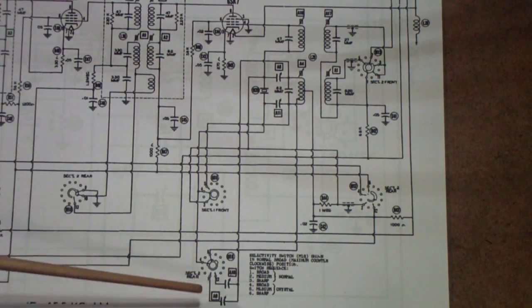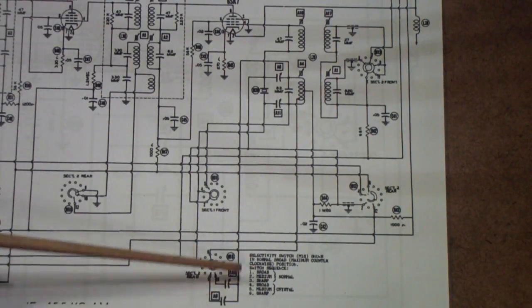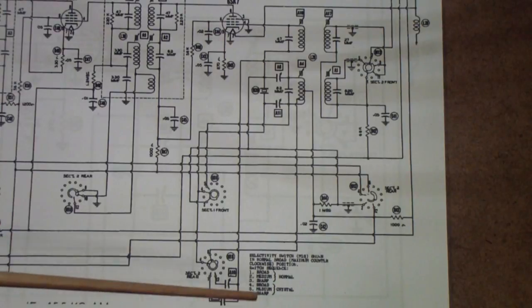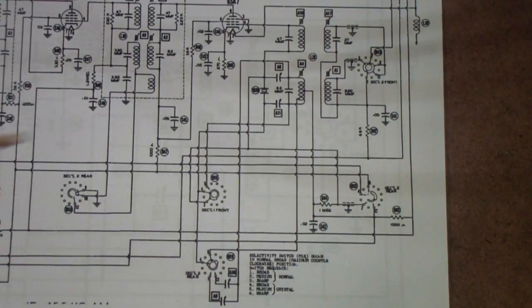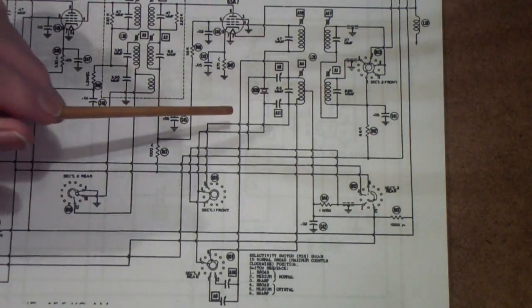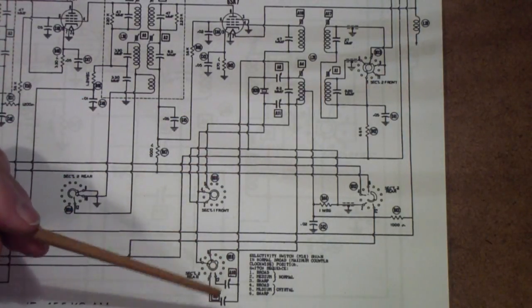Down here is the switch that selects the particular selectivity. In the SX-62, you have a number, I think it's a total of six different selectivities. You have a broad, a medium, and a narrow without the crystal, and then you have a broad and narrow with the crystal. Generally, the narrow or sharp crystal position is only used for CW. So, if you don't get that exactly right, and all you're listening to is single sideband and AM, then you don't really need to worry about that too much.